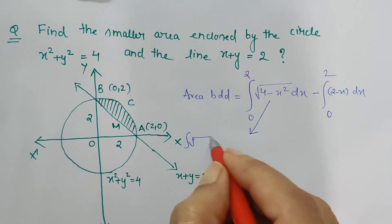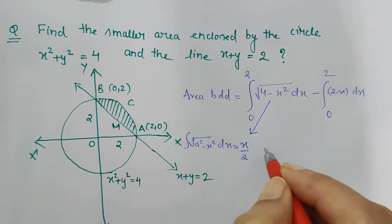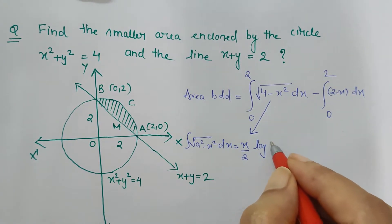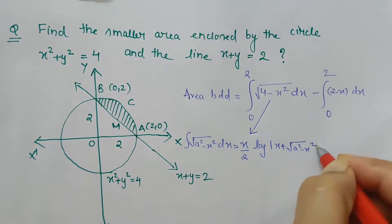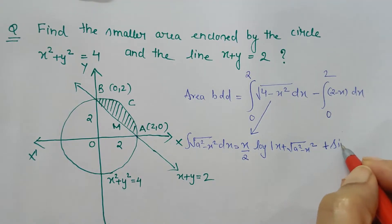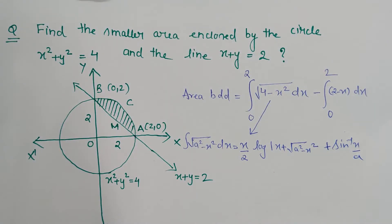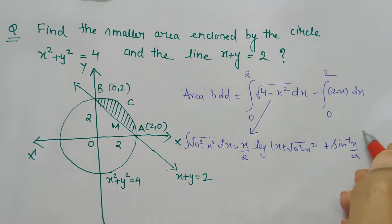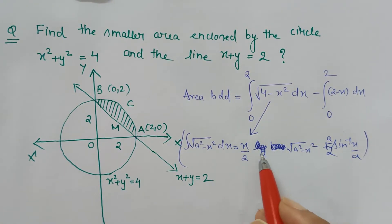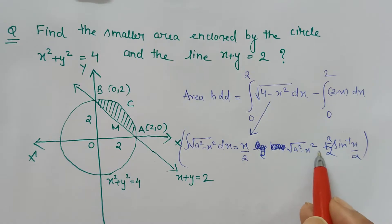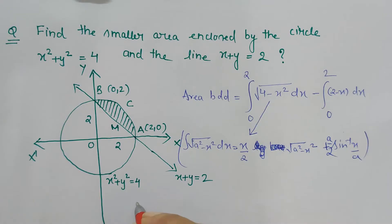The integral of √(a² - x²) dx is (x/2)√(a² - x²) + (a²/2)sin⁻¹(x/a). This is the formula which is to be substituted here. Actually, it's (x/2)√(a² - x²) + (a²/2)sin⁻¹(x/a). I am putting this formula in the equation.